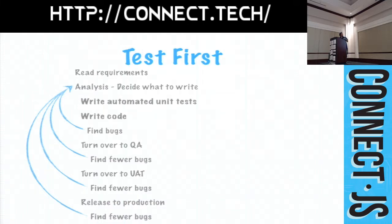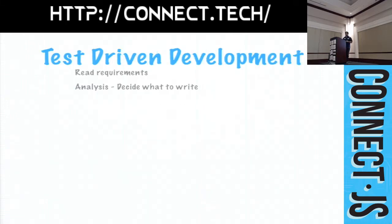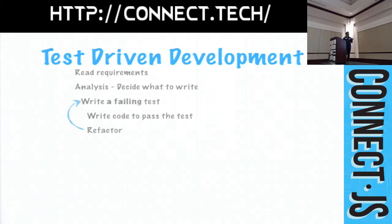At this point, we're doing the test first and finding fewer bugs, which is good. Then came along the idea of test-driven development. They were writing all this code and tests and had a lot to maintain, so TDD came along with a slightly changed process: write a failing test, write the code, and refactor — red, green, refactor.